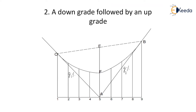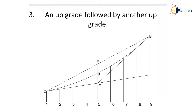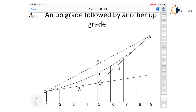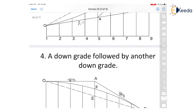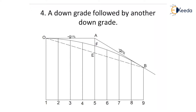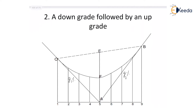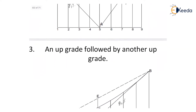The third type is an upgrade followed by another upgrade, where OA goes upward as one grade and AB again goes upward as the second grade. The fourth type is a downgrade followed by another downgrade, where OA is minus G1 percent and AB is minus G2 percent. So in total there are four types: upgrade-downgrade, downgrade-upgrade, both upgrades, and both downgrades.